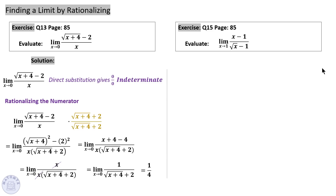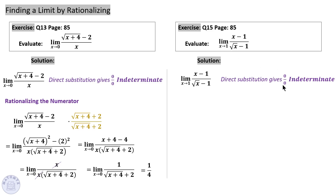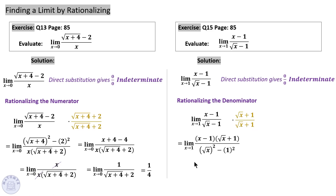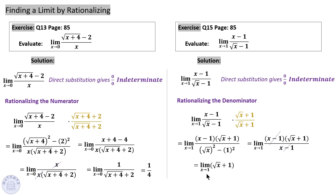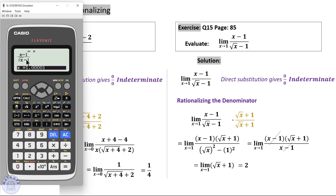For the next rationalizing example, substituting 1 gives 0 over 0, so we rationalize the denominator by multiplying by the conjugate (√(x+1) + ... ). This creates a difference of two squares; the square root cancels, leaving (x − 1) in the denominator which is a common factor with the top. After canceling, substitute 1 to get an answer of 2. Numerical approximation confirms the limit at 1 is approaching 2.